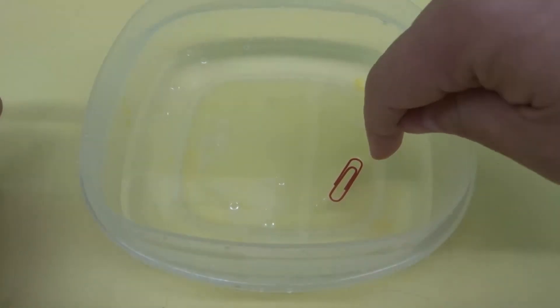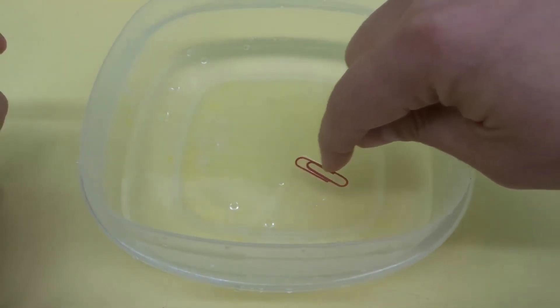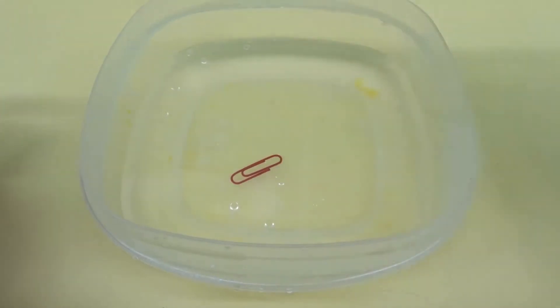And if you touch it and you alter it in any way, it will sink. So check this out. If I touch it, it's going to sink. If I push it down a bit, just like that, it's going to sink. But the way to get it to float on water is to gently place it in the water.